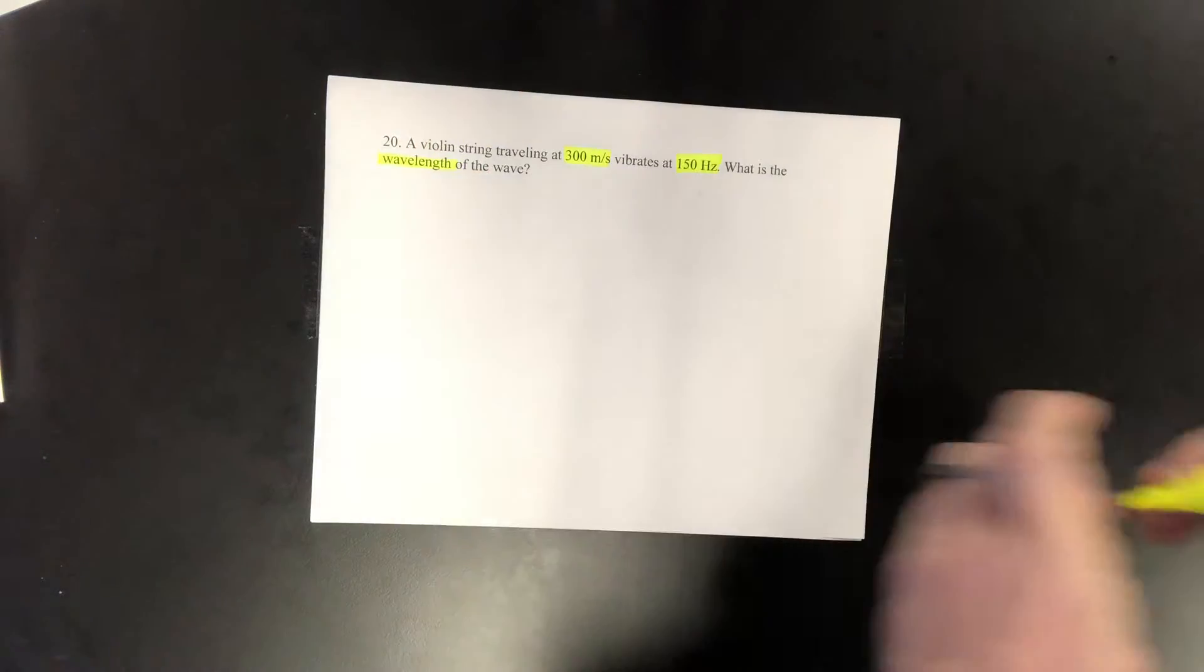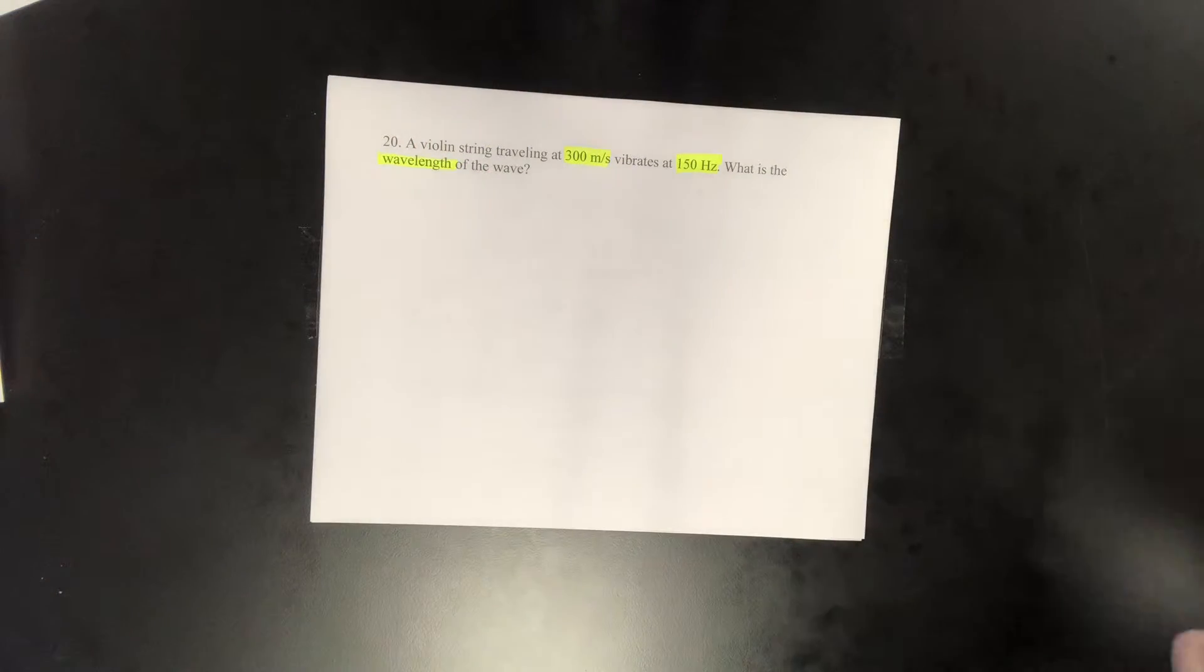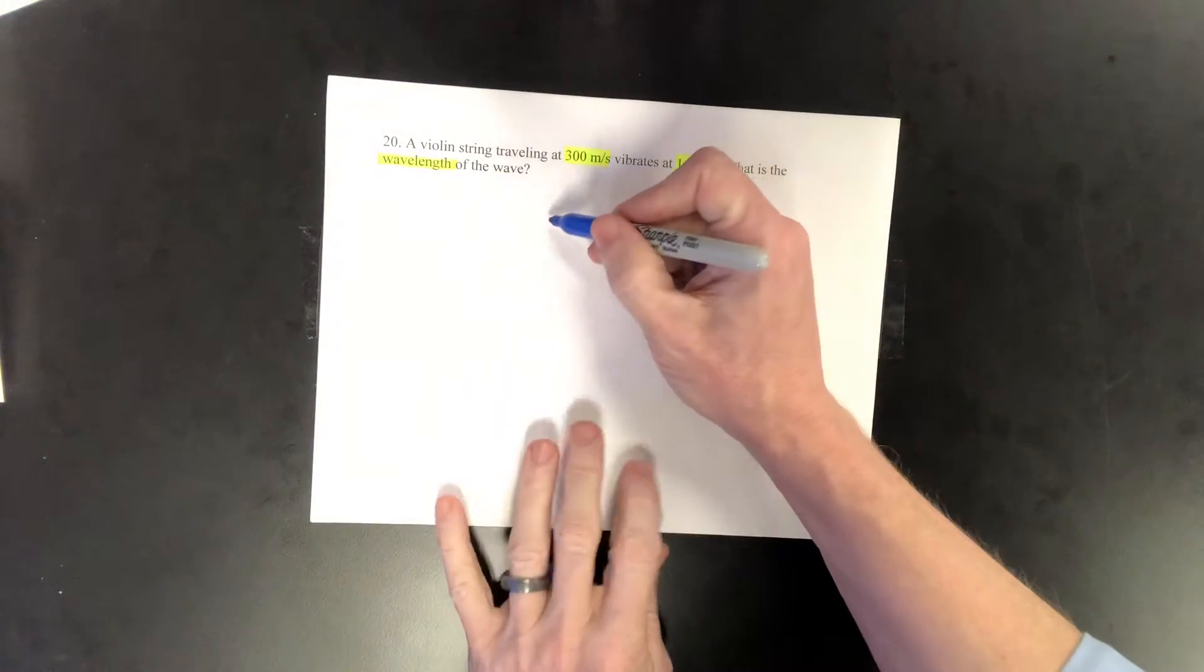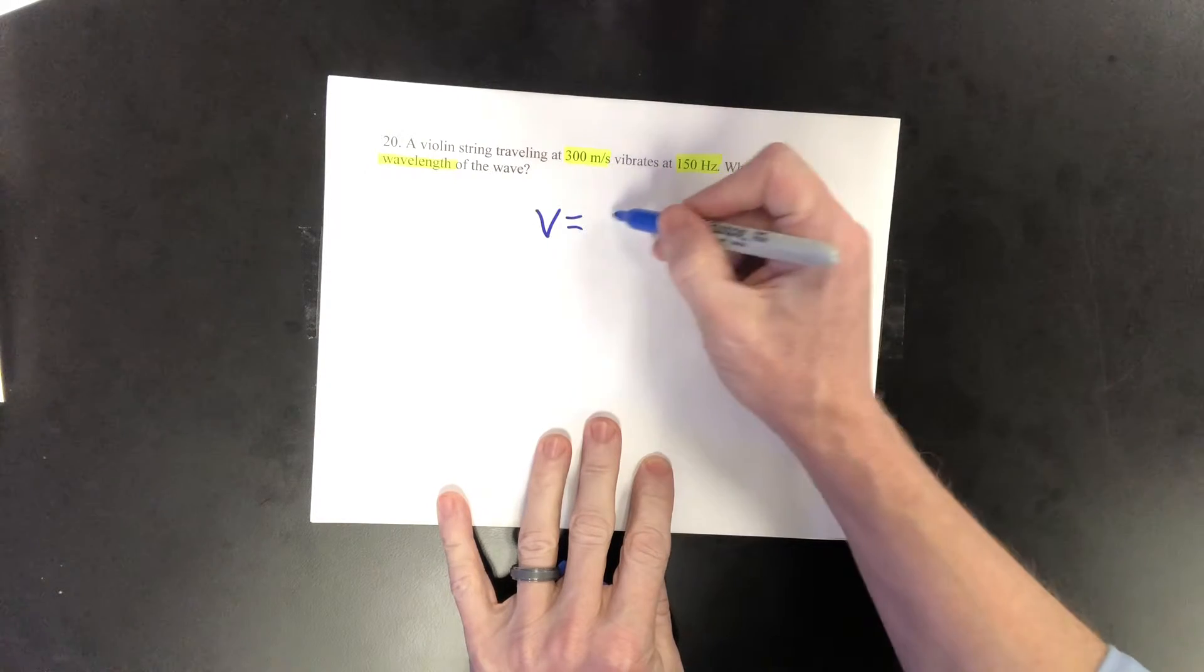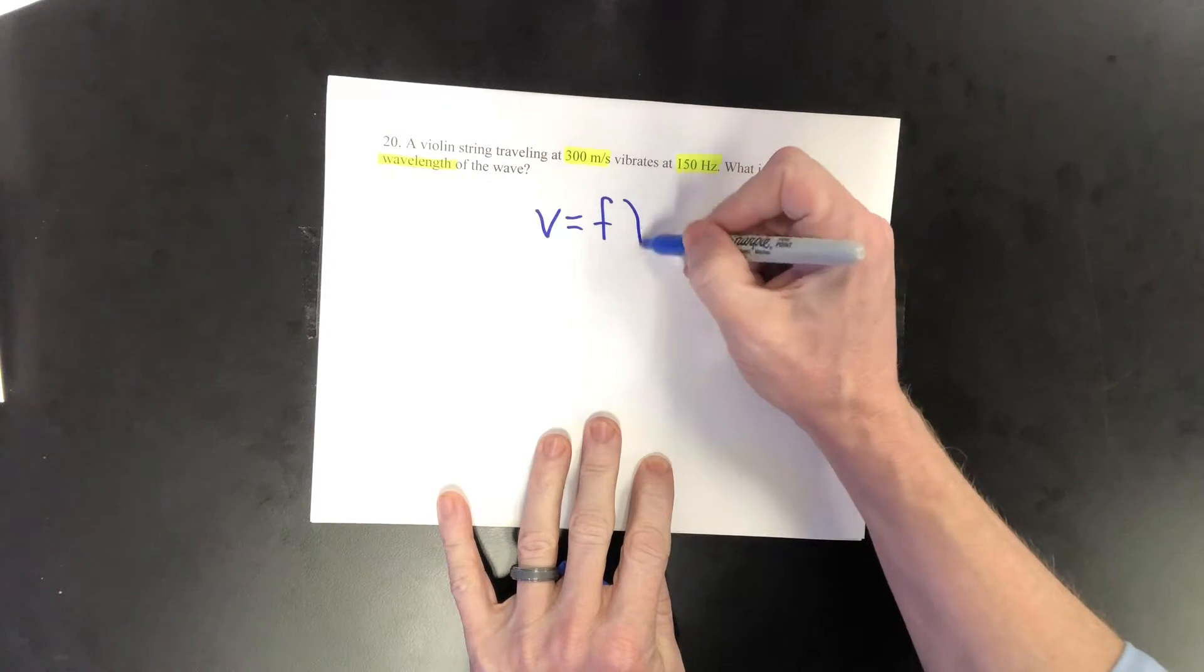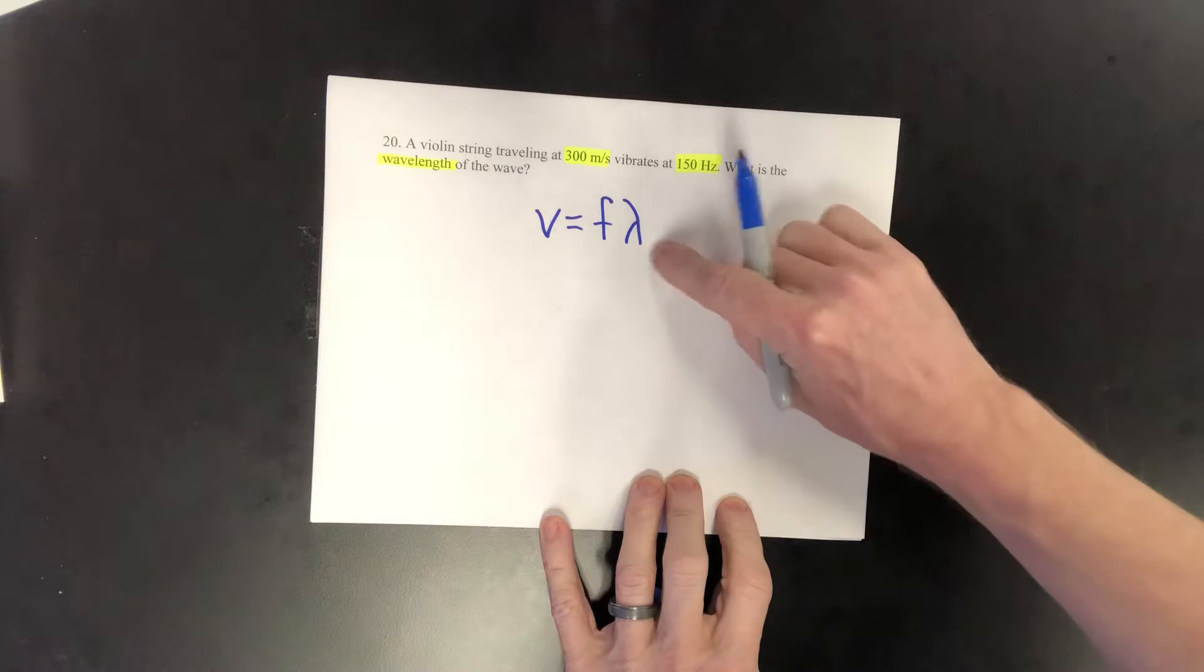To solve this, we'll use our formula for wave speed: speed equals frequency times wavelength, where the Greek letter lambda is our variable for wavelength.